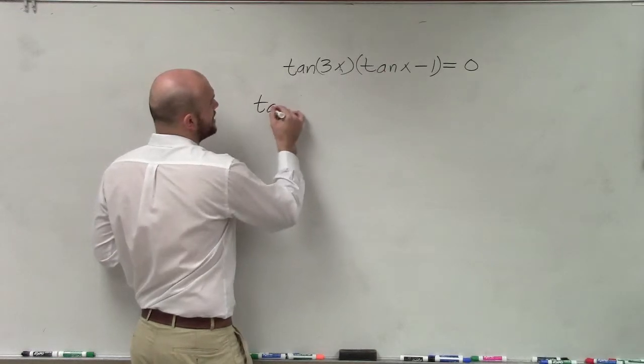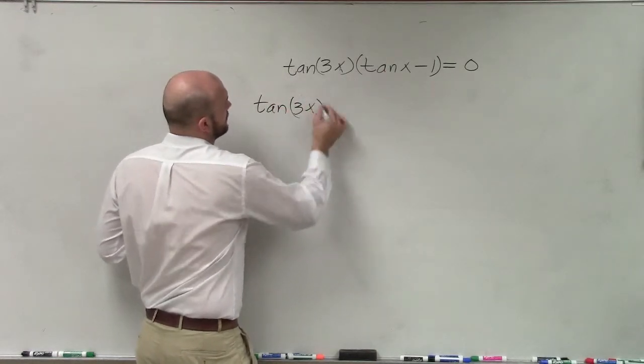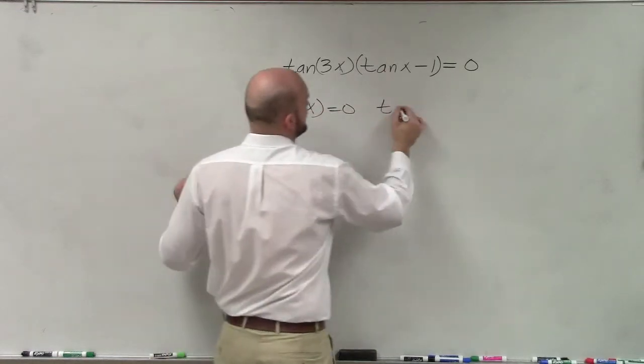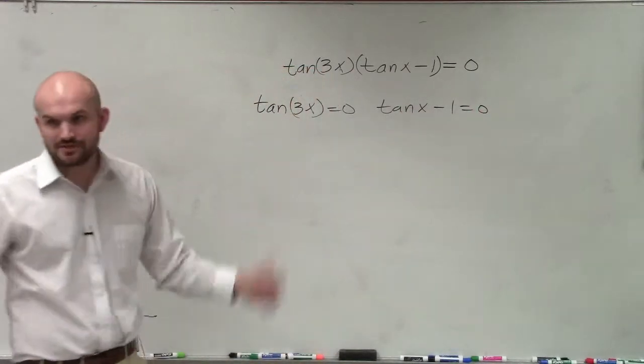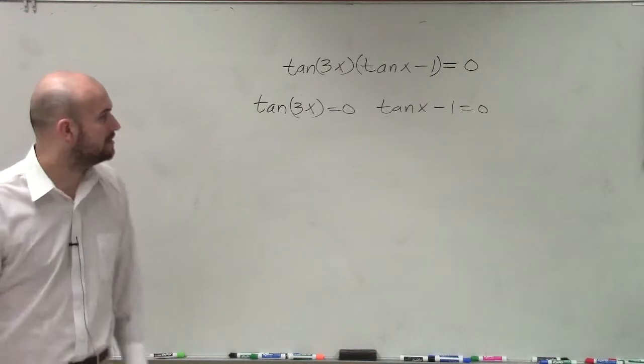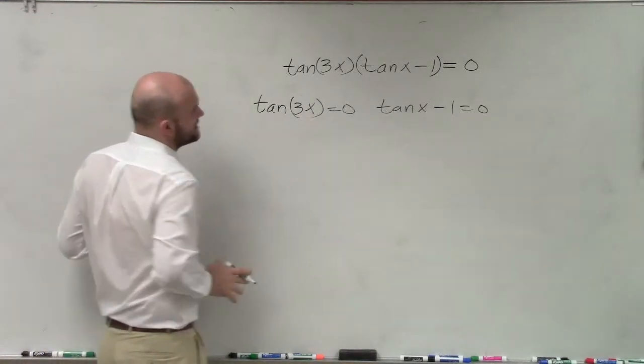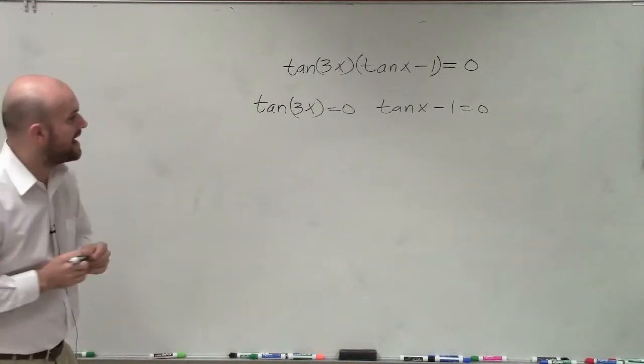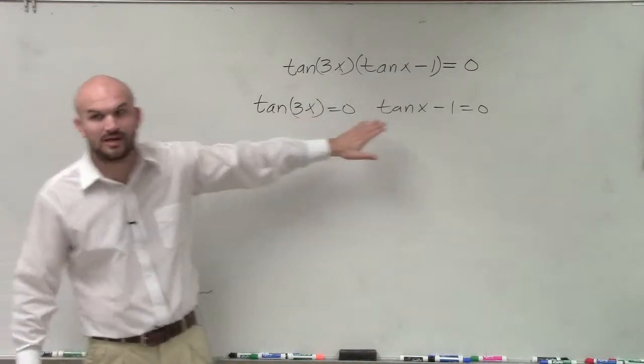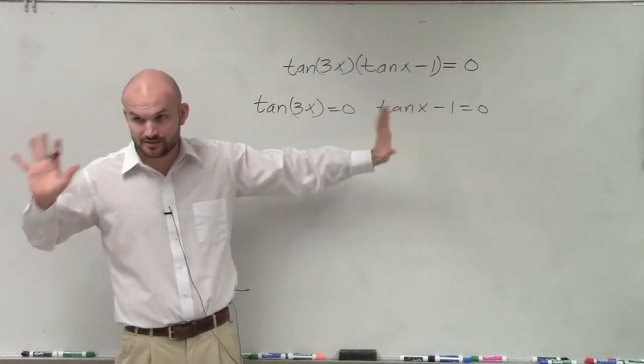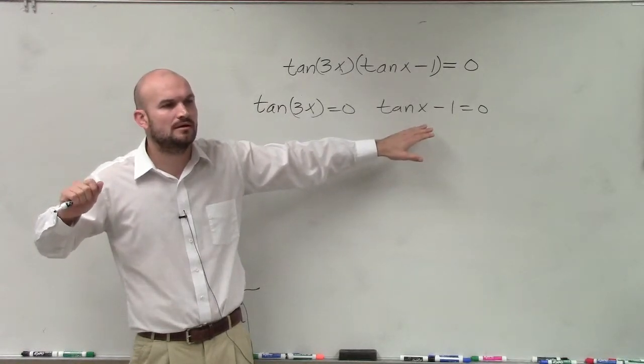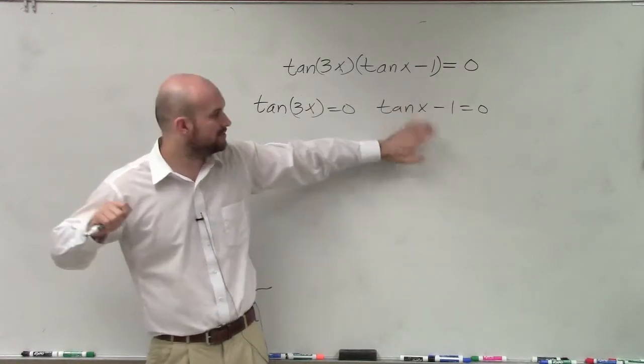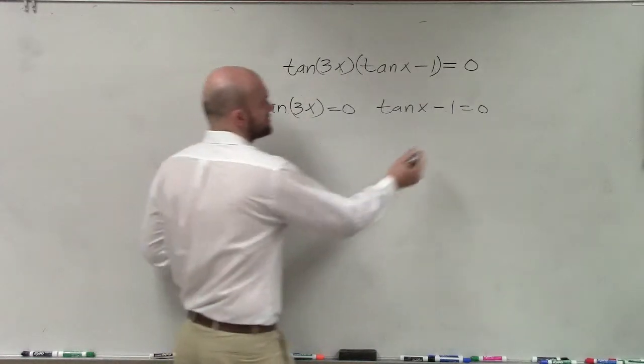So now, by applying the zero product property, I can now set each equation equal to 0. And now it's much easier for me to go and solve this. So to go ahead and see when does tan of x. Now remember, when we're looking with these multiple angles, don't worry about the 3x. Just worry about right there. And just say find all the solutions or find the solution between 0 and 2π. We'll just do all the solutions for this one.